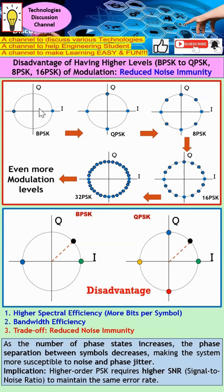However, the biggest trade-off will be the reducing of noise immunity. What does that mean? Let's take a look at these two constellation diagrams. Let's imagine there is no black-coloured dot for now. Under BPSK, for example, when the message is zero, it will appear at the green-coloured dot. When the message is equal to one, it will appear at the blue-coloured dot.